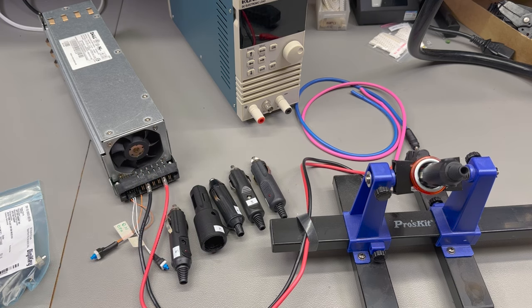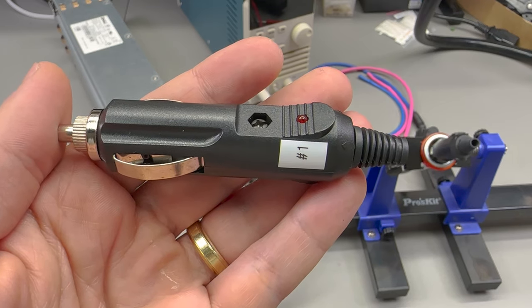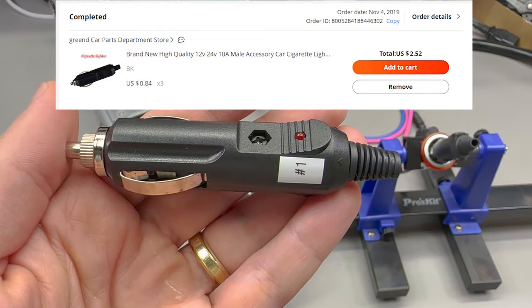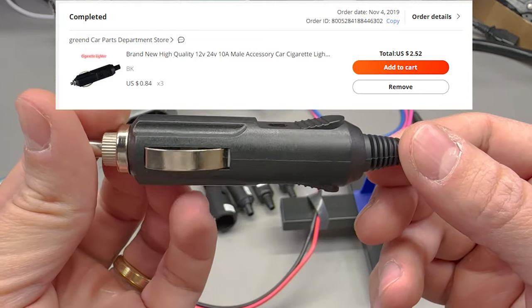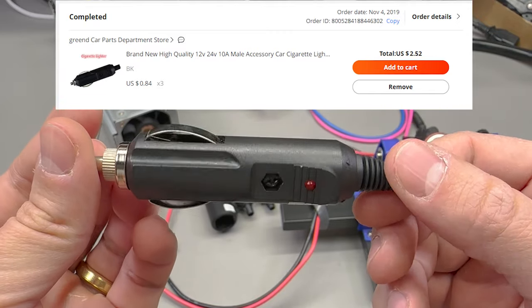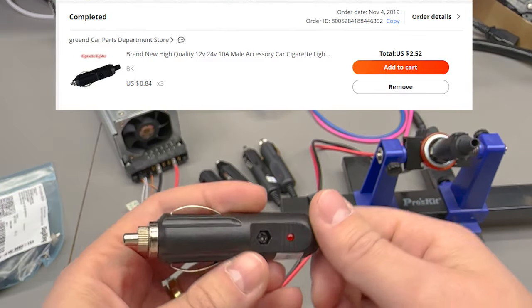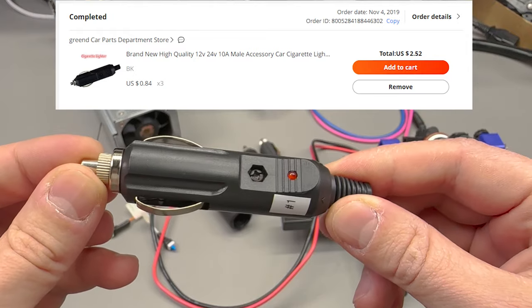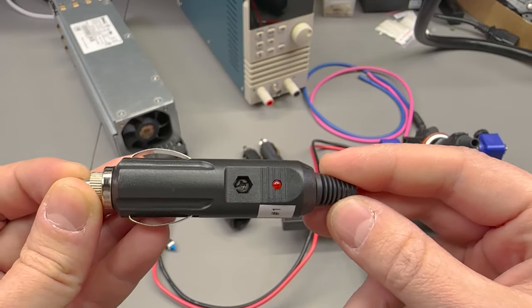Sample number one is this connector which I got back in 2019 for about 85 cents a piece. This was labeled by the seller as brand new high quality 12 volt 24 volt 10 amp male accessory car cigarette lighter plug socket. I'm pretty sure I've tried using one of these before and it melted at 10 amps, but we'll see how it does today.